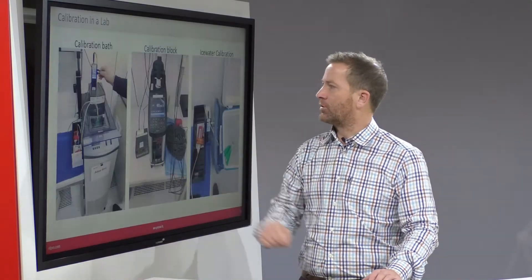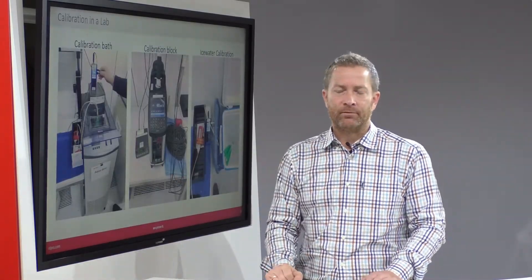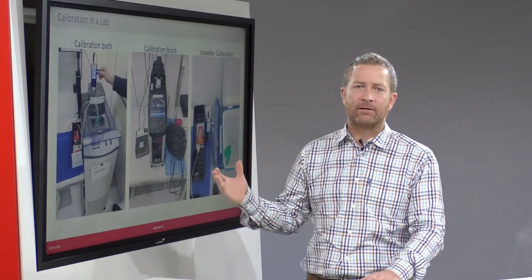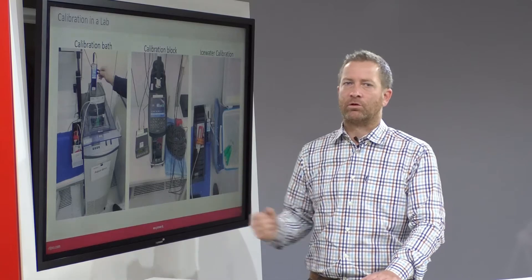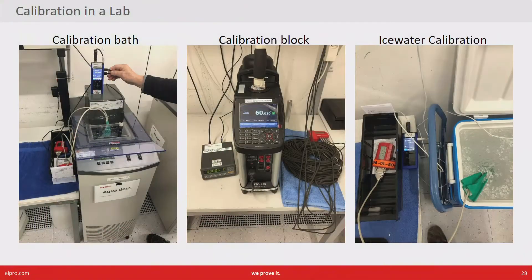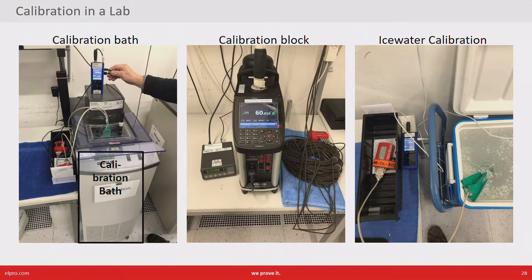I've taken a few pictures in our calibration lab showing three different techniques and devices used to perform calibration. On the left-hand side you see a calibration bath. As a liquid we use either distilled water or ethanol, and we can calibrate devices from minus 20 to plus 70 degrees. Calibration baths have the huge advantage of providing a lot of space, so you can dip entire devices inside the liquid.